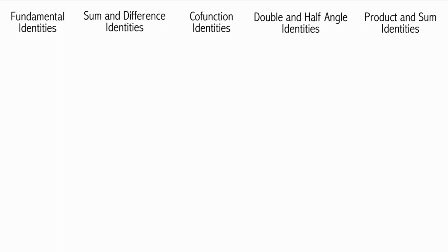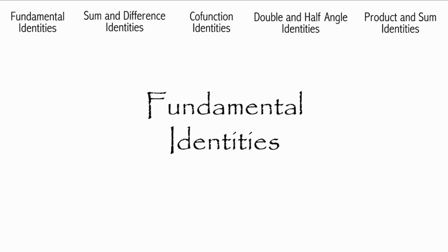Okay, so now that you know how to use this, let's begin. The first set of identities we're going to go over are the fundamental identities, and these include the reciprocal identities, the Pythagorean identities, and the negative angle identities.